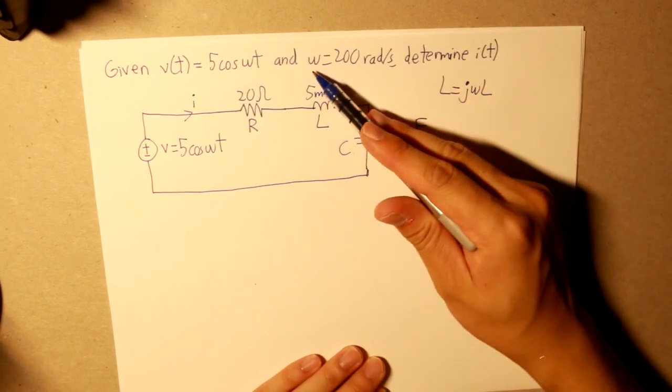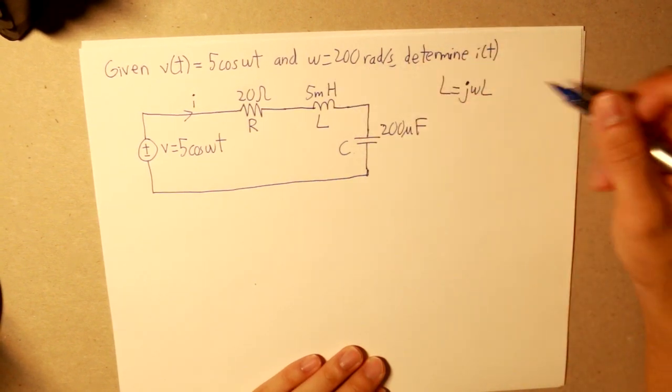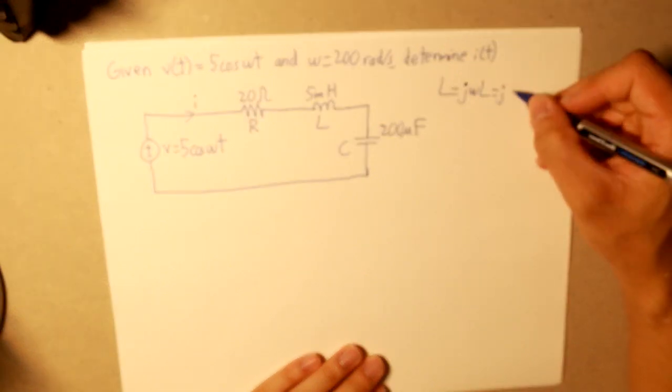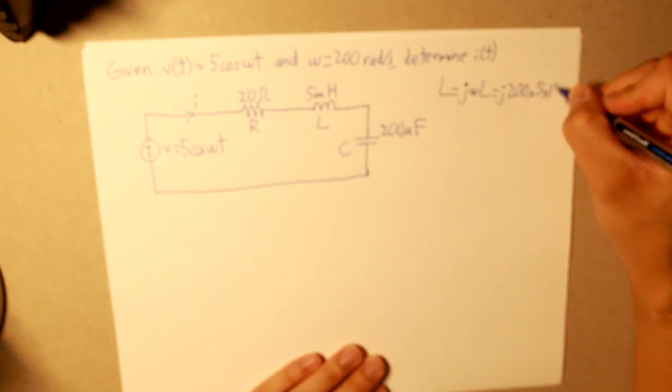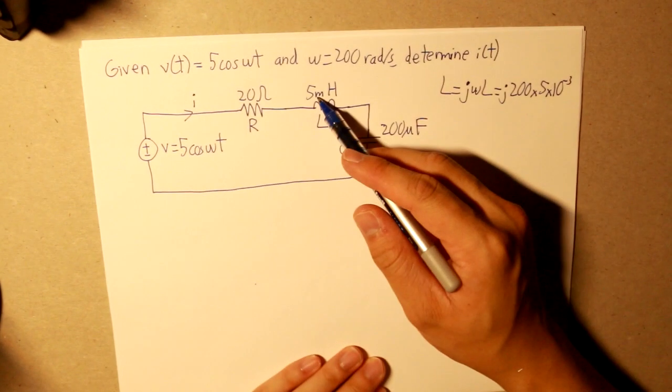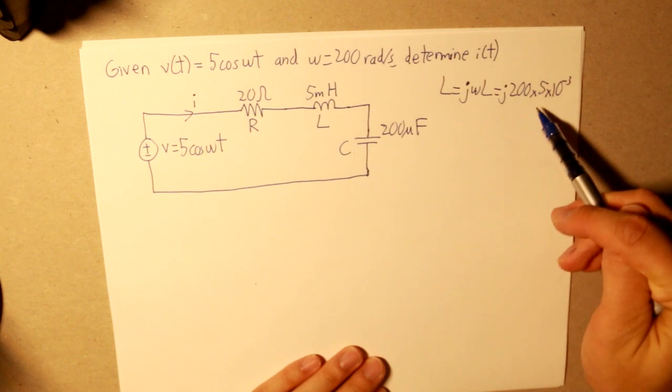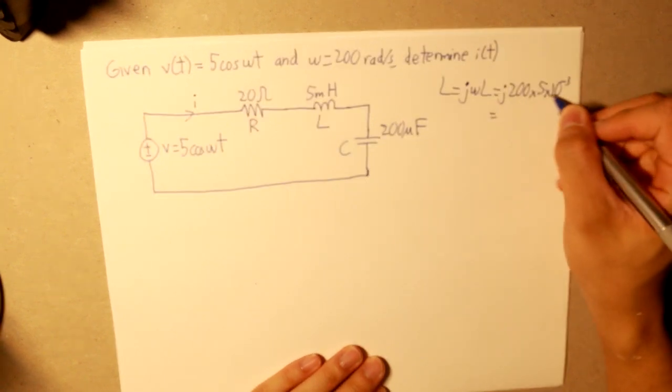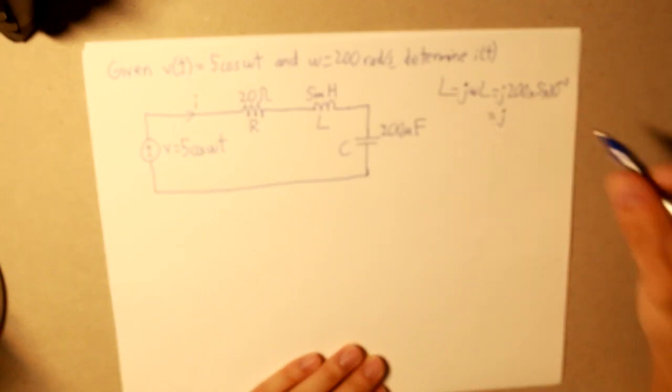So given that the angular frequency ω is 200, so we have 200 here, what we get is j times 200 times 5 times 10 to the negative 3, since this is milliH. So we get that, and our answer to that will be 1. So we have j alone.